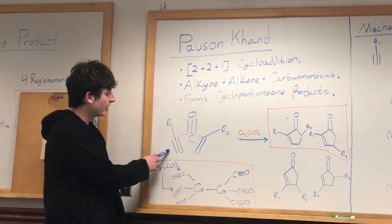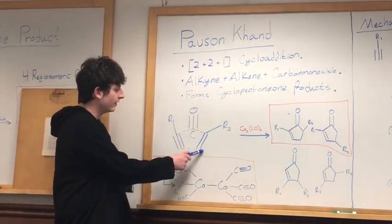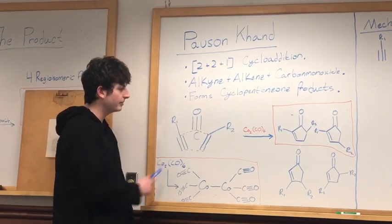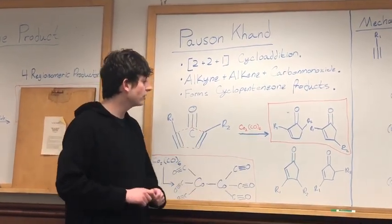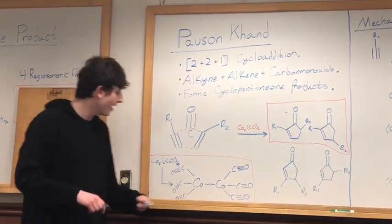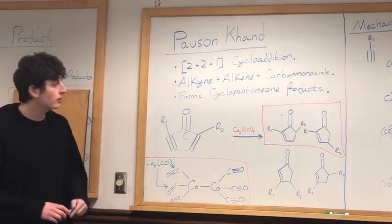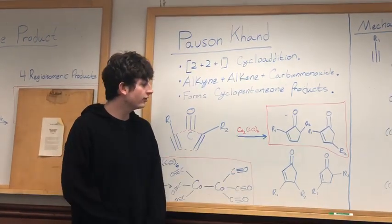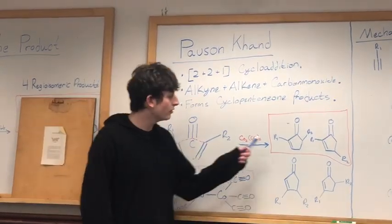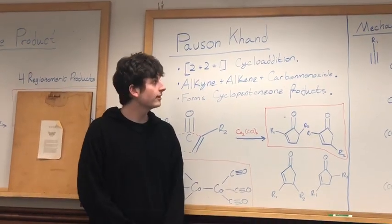Here you can see the alkyne, the carbon monoxide, and the alkene, as well as the new bonds that are being formed. This is going to be catalyzed by a cobalt-2 carbon monoxide-6 catalyst, and you can see that down here. Also, one of the things you're going to watch out for in this reaction is this forms four regioisomeric products, but two of them are going to be favored for steric reasons.